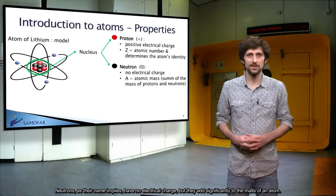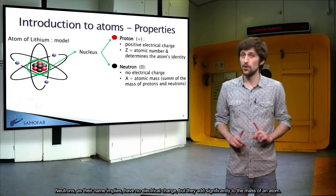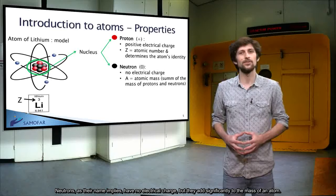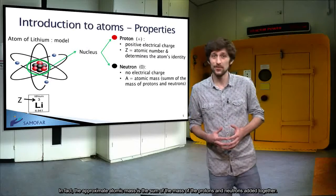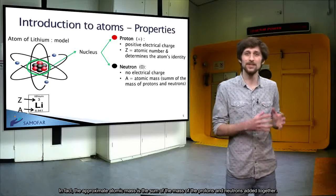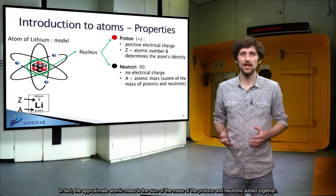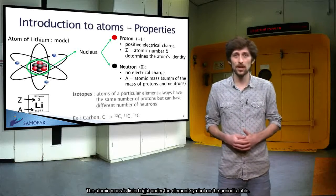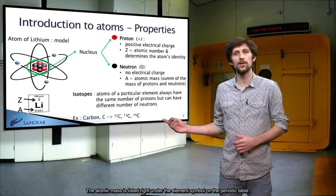Neutrons, as their name implies, have no electrical charge, but they add significantly to the mass of an atom. In fact, the approximate atomic mass is the sum of the mass of the protons and the neutrons added together. The atomic mass is listed right under the element symbol on the periodic table.